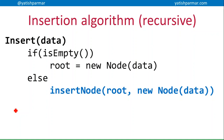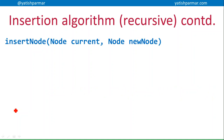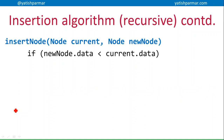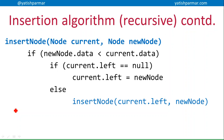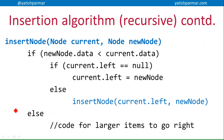We're going to traverse the tree to find where the data is going to go, using something similar to the binary search technique. If the new node's data is smaller than the current node, and if the current node's left is null, then we set the left pointer of the current node to the new node. Otherwise, we make a recursive call to go left again, following that left pointer to see if we can insert the new node there or whether we need to do more traversal of the tree.